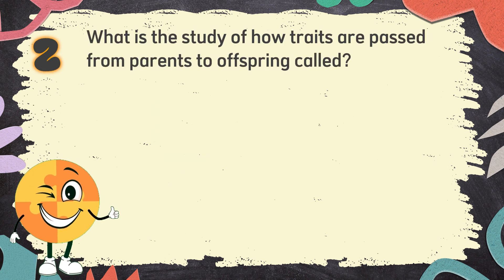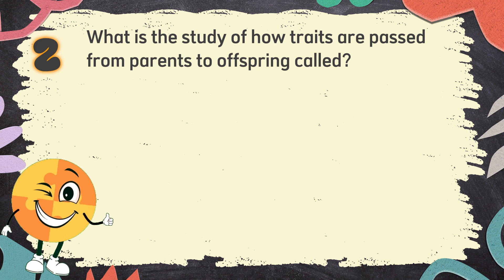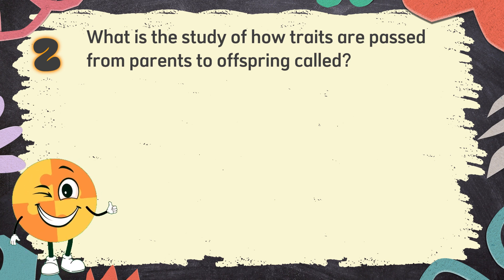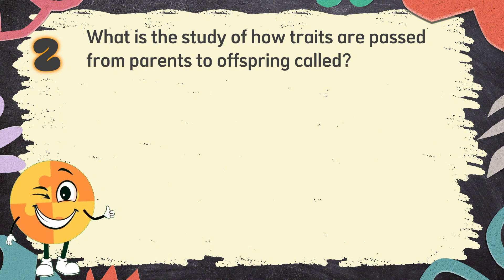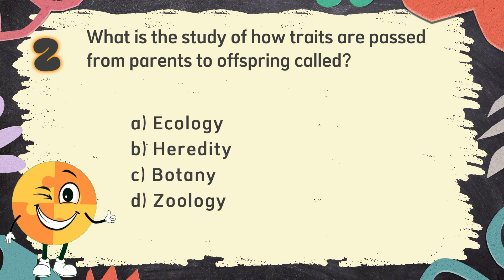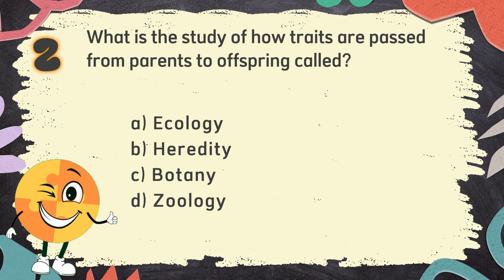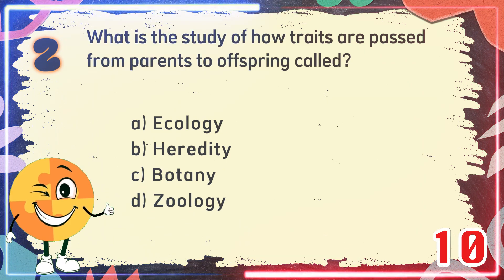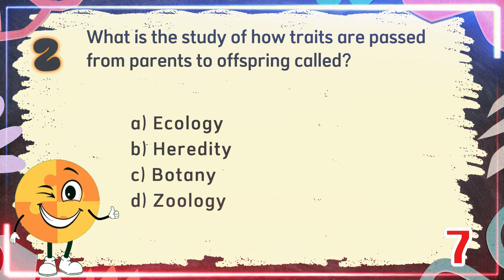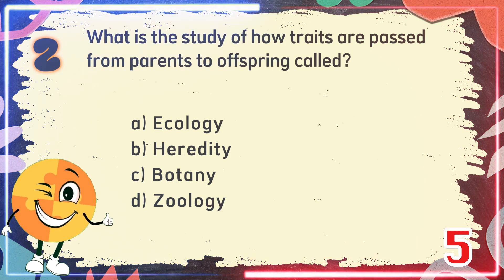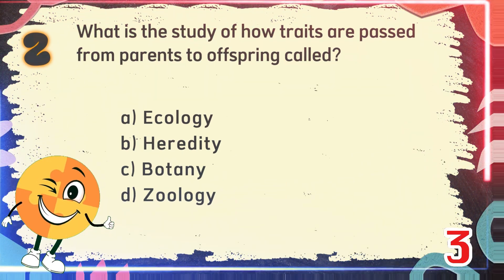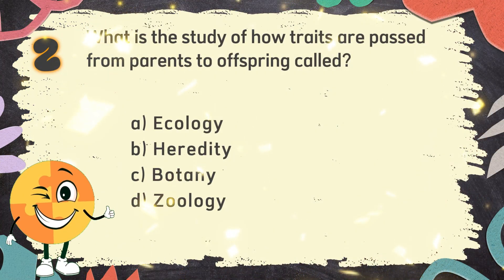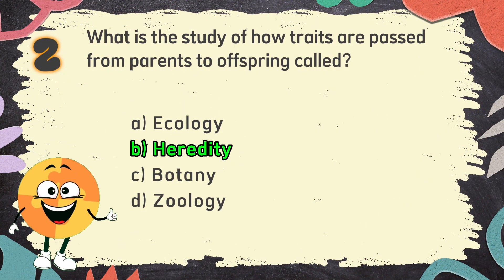Number 2. What is the study of how traits are passed from parents to offspring called? The choices are A. Ecology, B. Heredity, C. Botany, D. Zoology. The correct answer is B. Heredity.